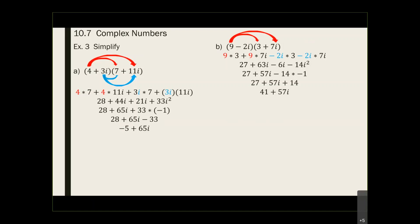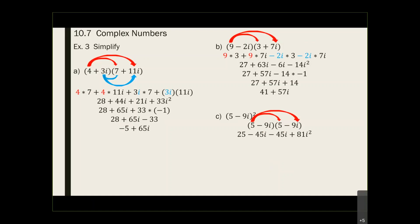Let's look at this problem: what if we have (5 minus 9i) squared on the outside? How do we do this? If you remember your special products, you can use that. If not, you can always write it out twice. Writing it out twice, we distribute: take the first times the last two, then the second item times the last parenthesis. That gives: 5 times 5 is 25, 5 times 9 is 45, 9 times 5 is 45, and 9 times 9 is 81i squared. Combining like terms: 45 and 45 give 90, and i squared becomes negative 1, so I have 25 minus 90i minus 81.